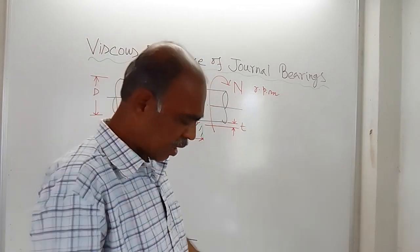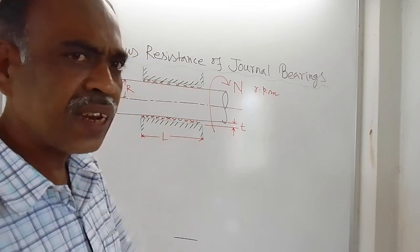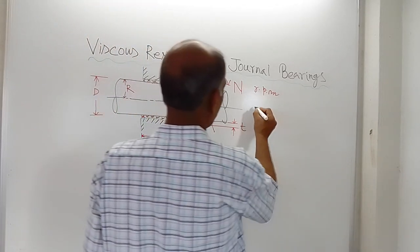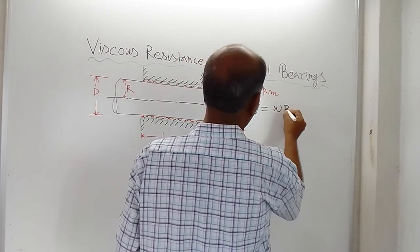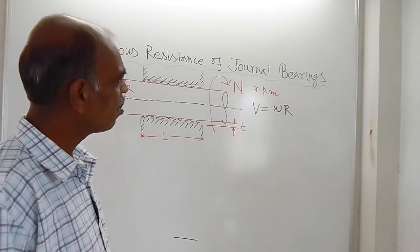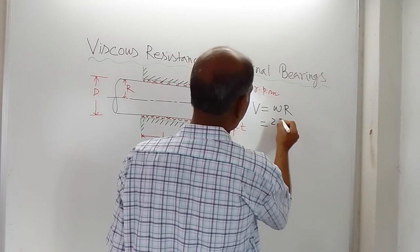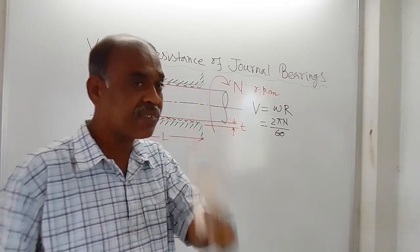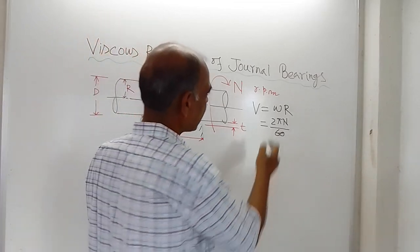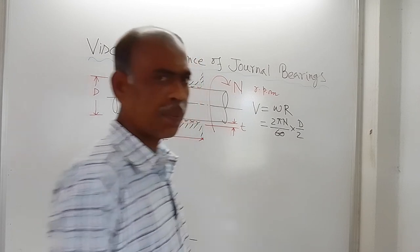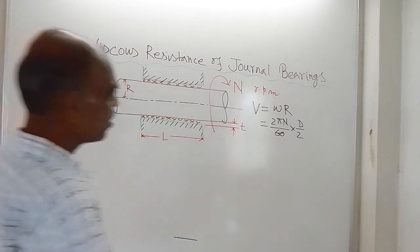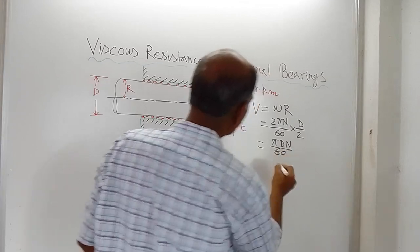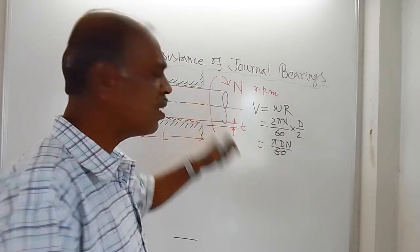If N is RPM, then what is the linear velocity? Linear velocity V is equal to omega into R, where R is the radius of the shaft. And omega is equal to 2πN/60, where N is RPM of the shaft. And R is half of the diameter D, so this becomes V = πDN/60. This V is the linear speed of the shaft.